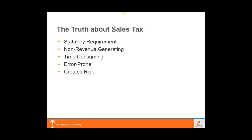As it relates to sales and use tax, most CFOs look at it and say: to be honest, it's not a strategic part of our business — we're not generating revenue by putting our time here. It's time-consuming and can create risk if you're not doing it correctly. There's not a lot to gain, and there's some to lose, which is why automation has continued to be an option for many companies.